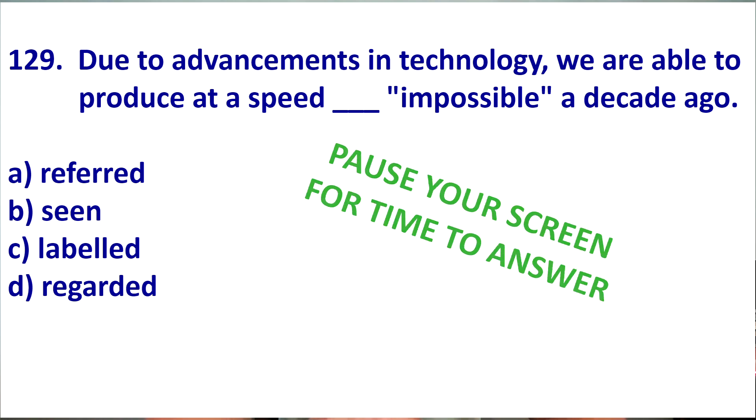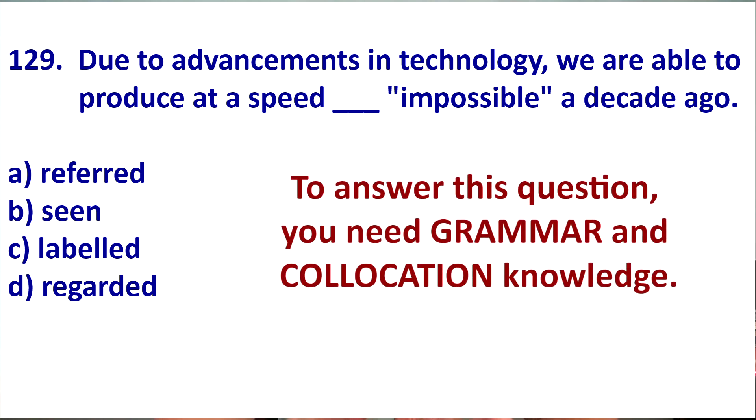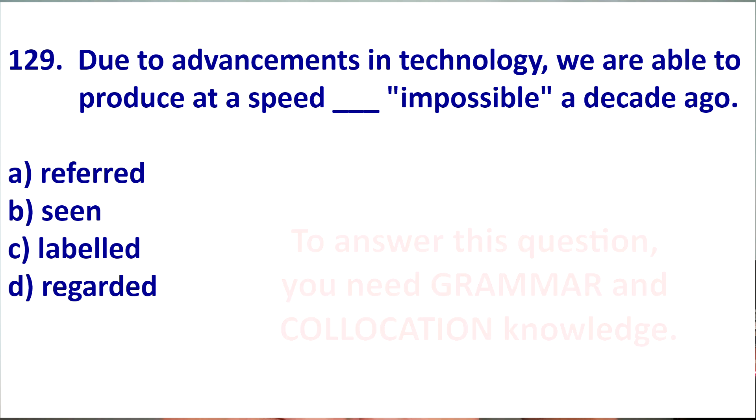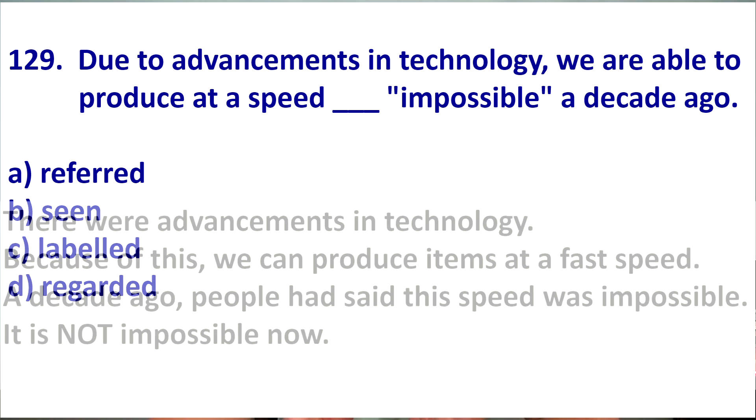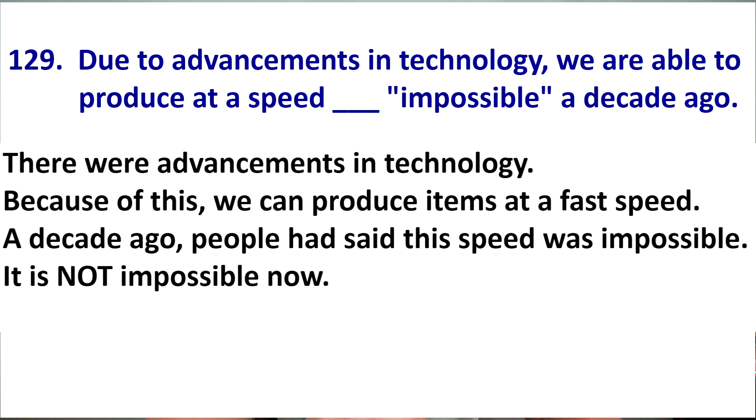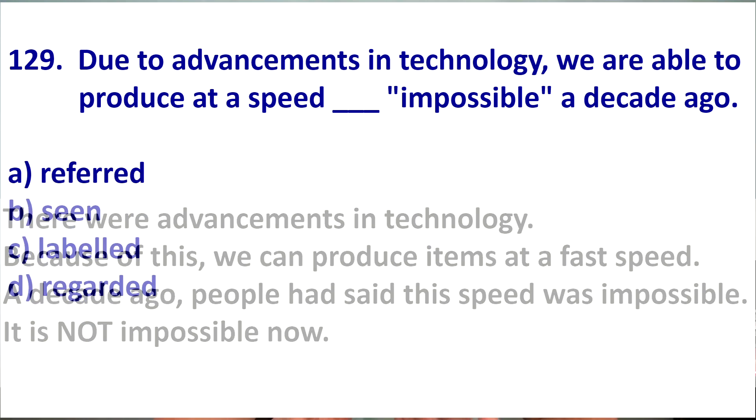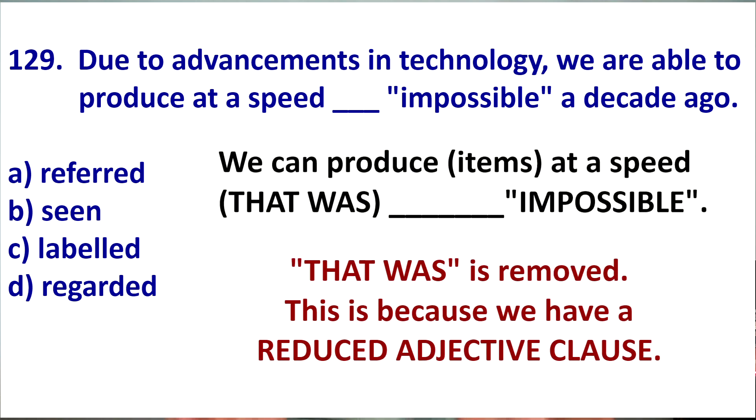Okay, so fortunately or unfortunately, this is all about grammar and collocations. Let's break this statement into simpler terms. There were advancements in technology. Because of this, we can produce items at a fast speed. A decade ago, people had said that this speed was impossible. It is not impossible now. So, we can now produce items, products at a speed that was blank, impossible a decade ago.